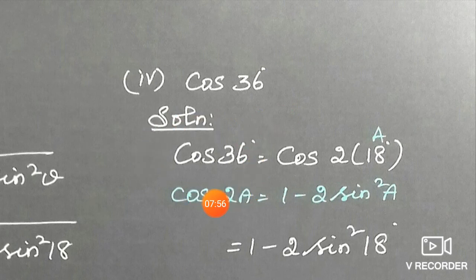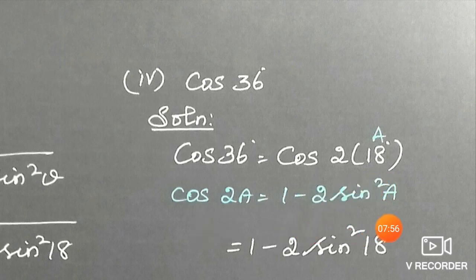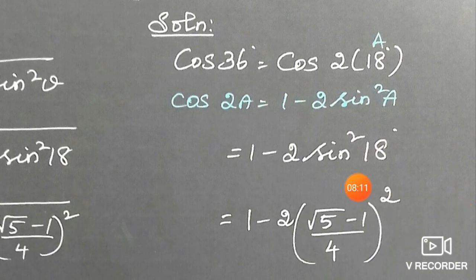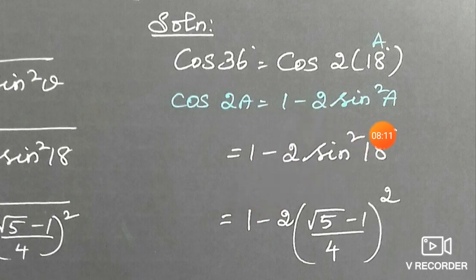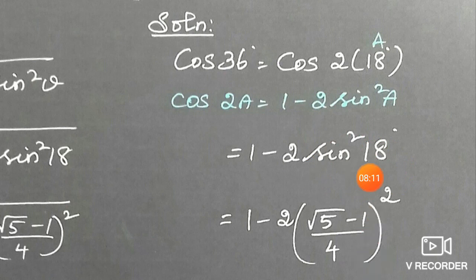Next, find cos 36°. Since 36° = 2 × 18°, apply the double angle identity cos 2A = 1 − 2sin²A with A = 18°. So cos 36° = 1 − 2sin²18°. Substitute sin 18° = (√5 − 1)/4 and square it using (a − b)² = a² − 2ab + b².